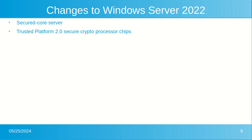Trusted Platform Module 2.0 uses secure crypto processor chips to provide a secure hardware-based store for sensitive cryptographic keys and data. This includes system integrity measurements. TPM 2.0 can verify that the server has been started with legitimate code and it can be trusted by subsequent code execution.